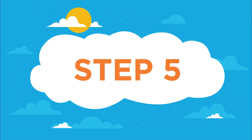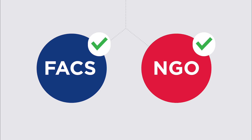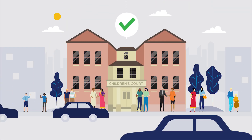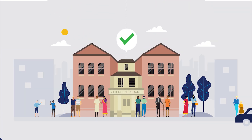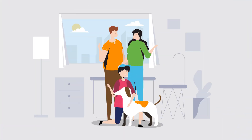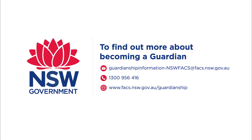Step 5: If your guardianship application is approved, FACS and your NGO prepare guardianship documents for the Children's Court. The Children's Court makes the final decision. The process takes time, but for the child, it's worth the wait.